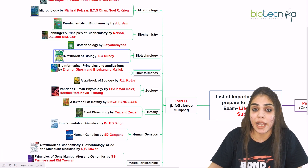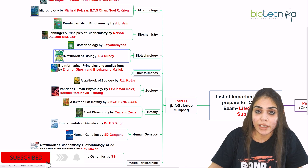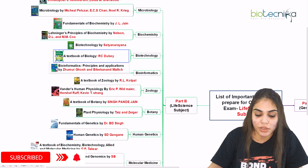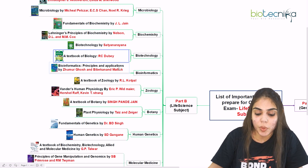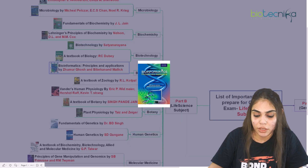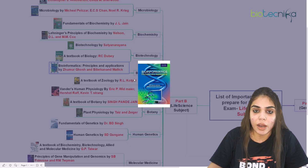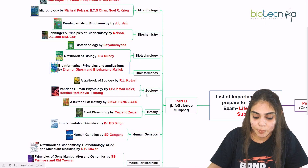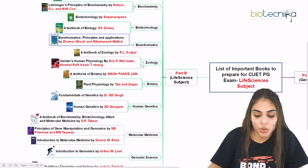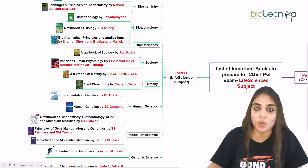For bioinformatics, you will be asked about bioinformatics and all the databases. The best book for this is Bioinformatics: Principles and Applications by Zhumur Ghosh and Vivekanand Malik. You can easily get the ebook for this, so download the PDF and start preparing for the bioinformatics subject.